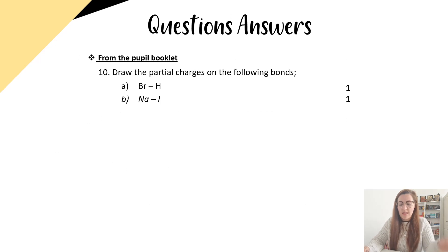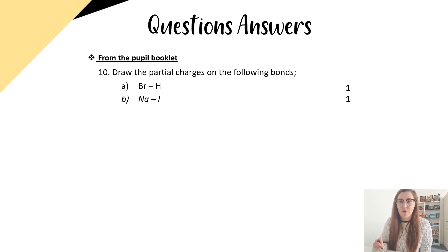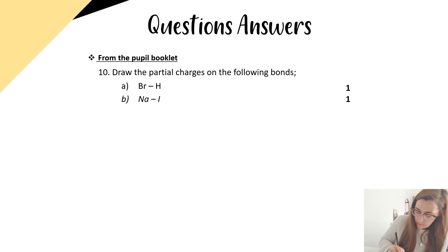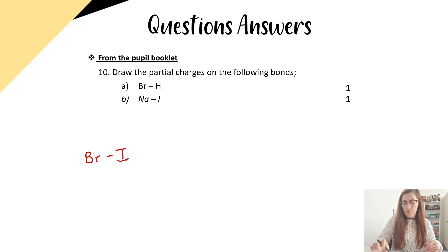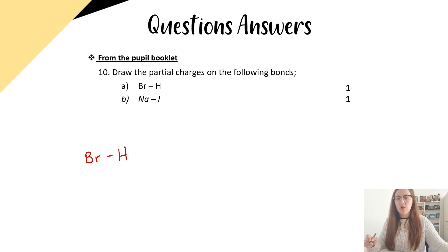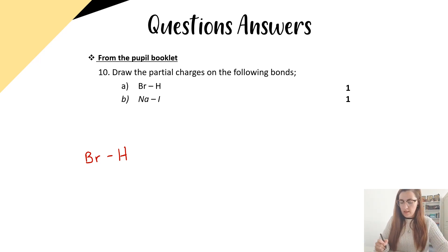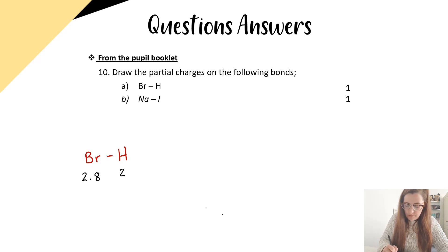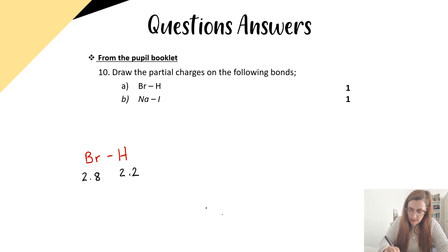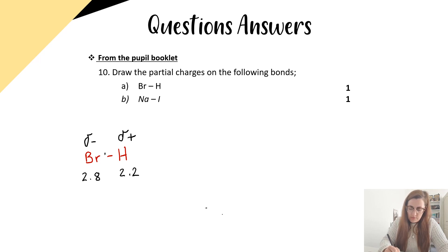We're starting with question 10, which asks us to draw the partial charges on the following bonds. First, bromine hydride. To draw partial charges, I look up the electronegativities on page 11: bromine is 2.8 and hydrogen is 2.2. Bromine has the higher electronegativity value, so the electrons sit closer to bromine — bromine gets delta negative and hydrogen gets delta positive.